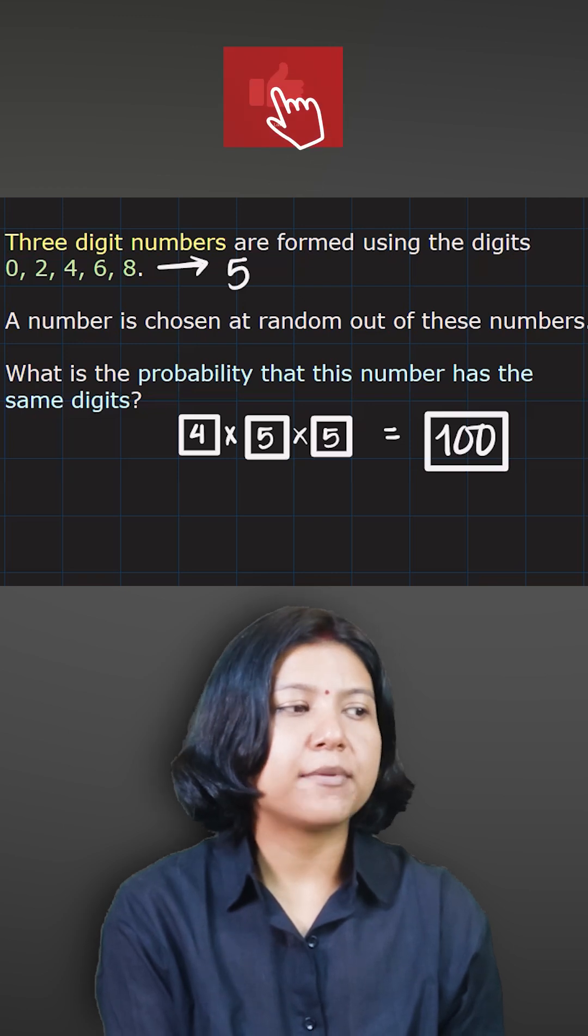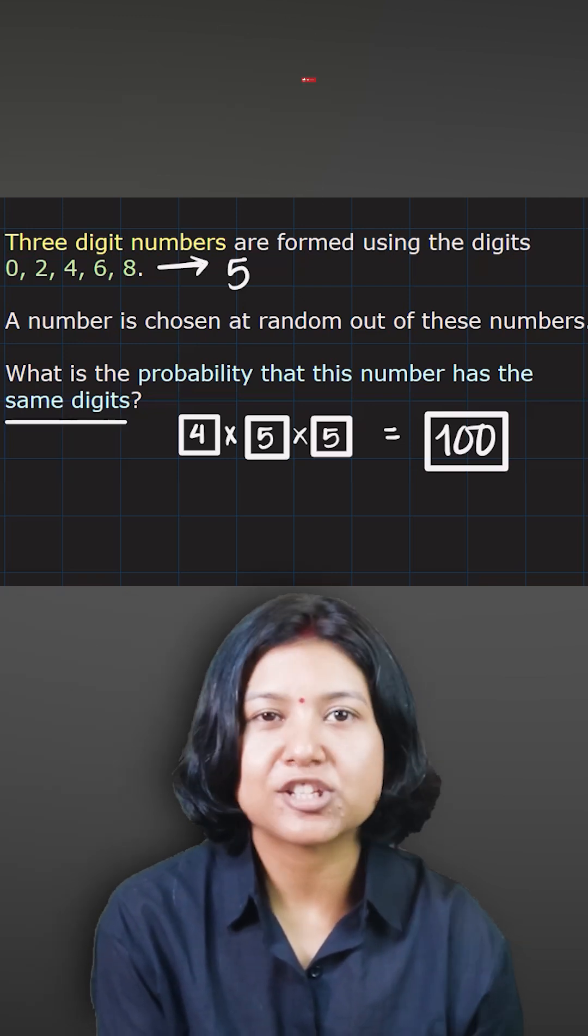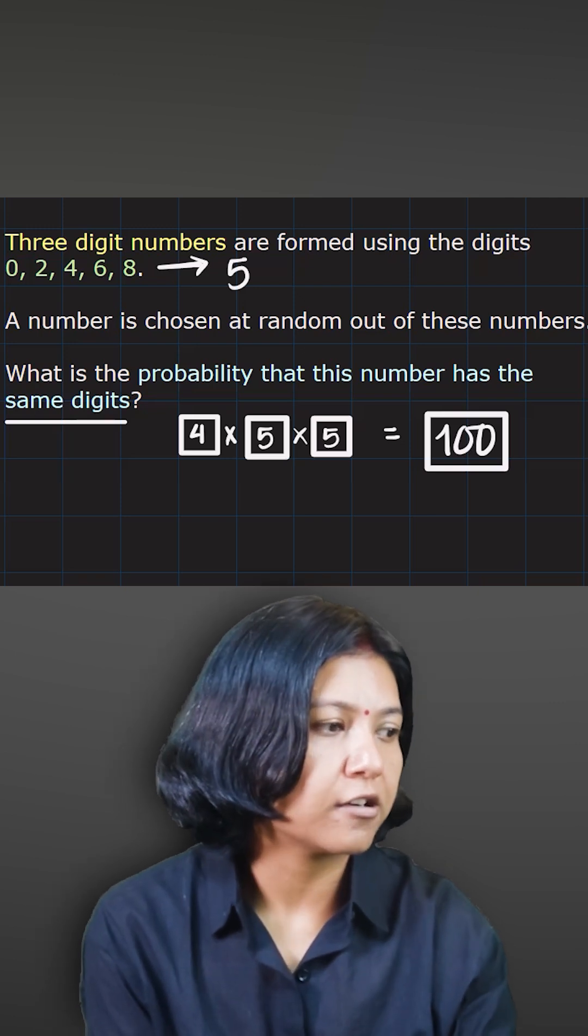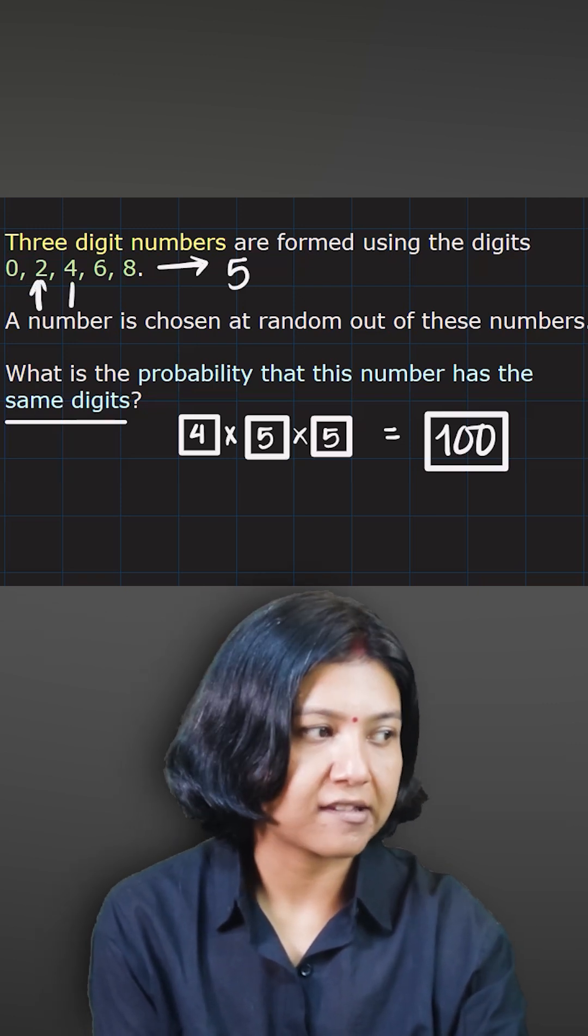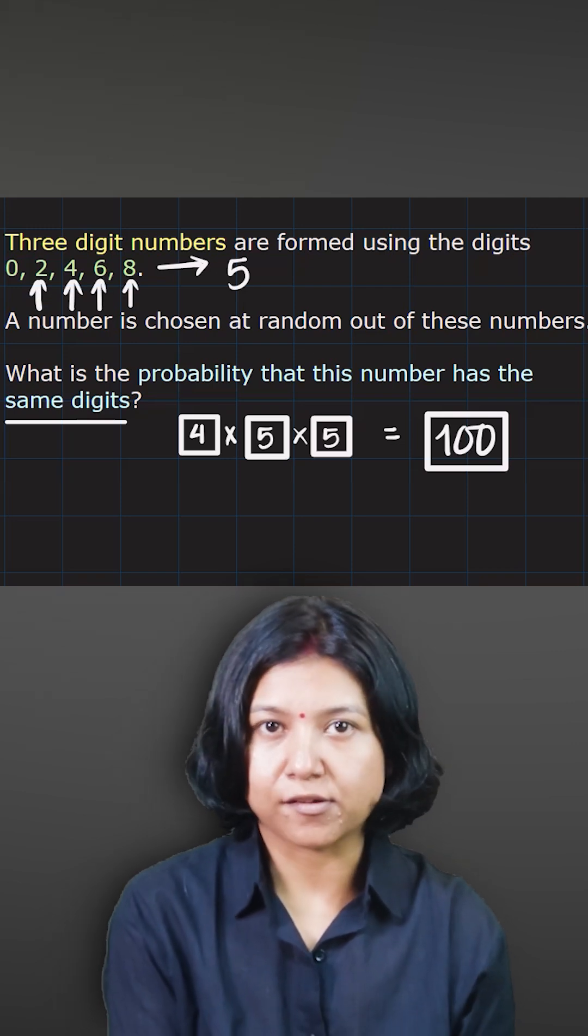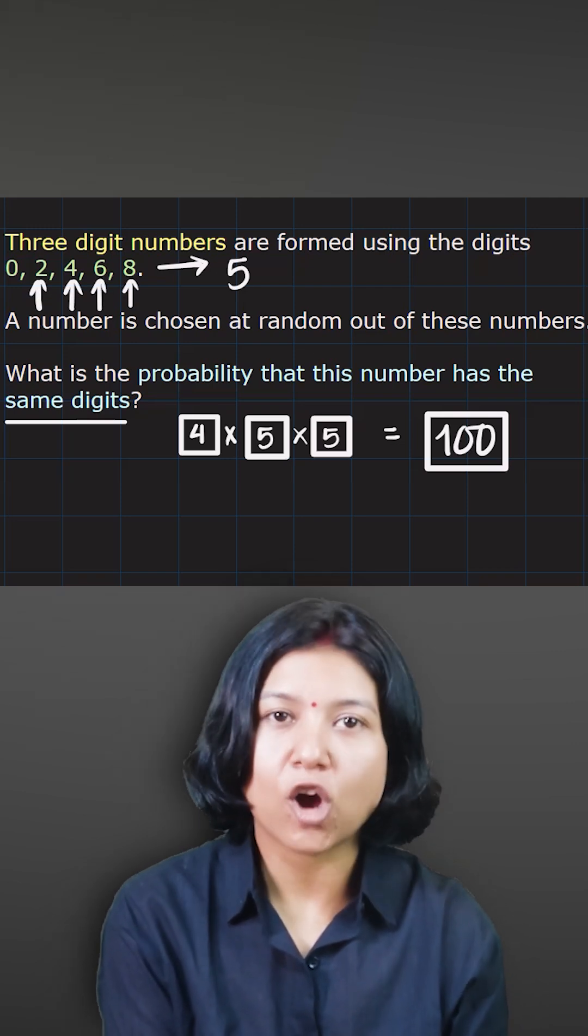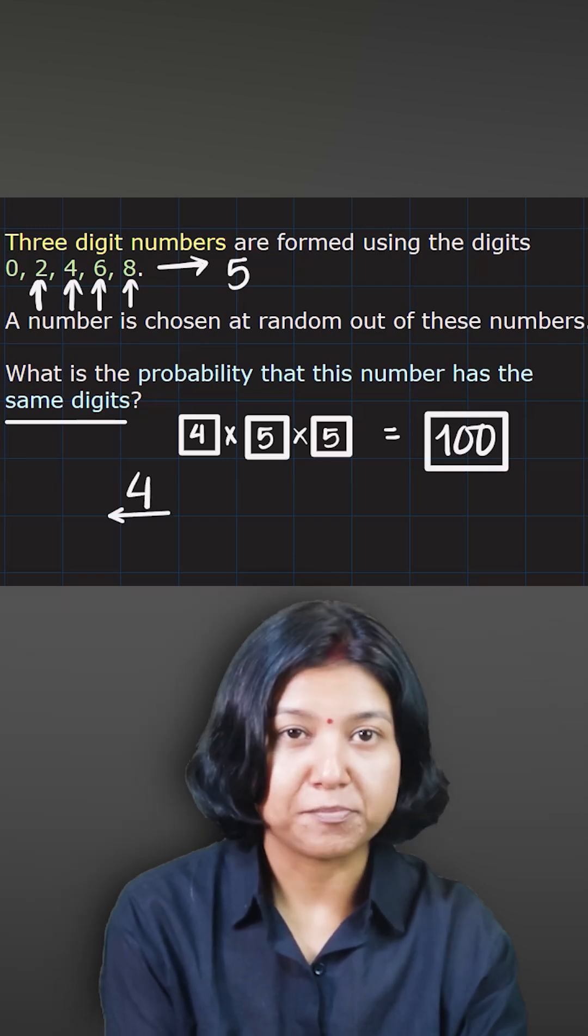Now the question wants you to find the probability that this number has the same digits. Having the same digits means you want the number to be 222, 444, 666, or 888. Clearly, no number can be 000. So we have four options out of 100 that could have the repeated digit.